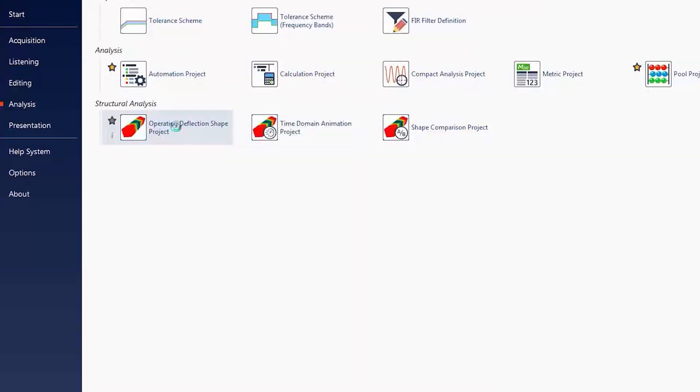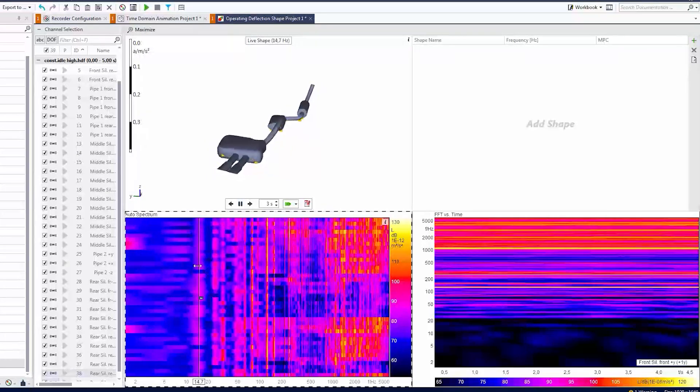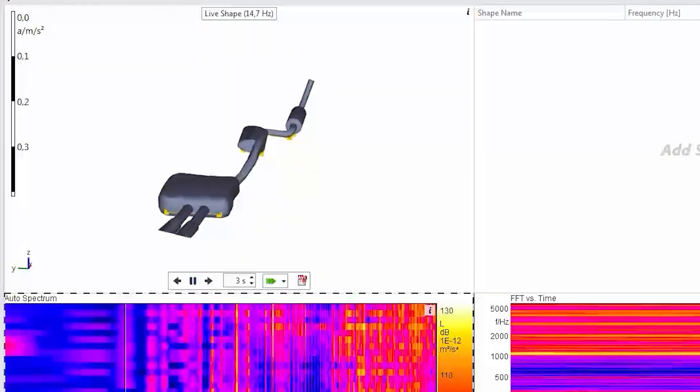But it gets even better. I can pick out a constant operating point from the measured data and break it down to its individual frequency-dependent vibration forms by the help of the ODS analysis. Deep analysis. Let's have a look. Here at 15 Hz, very low frequency, we have more of a rigid body movement. It's more like a dog's tail wagging.